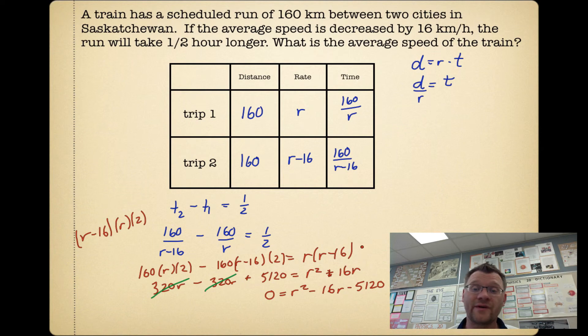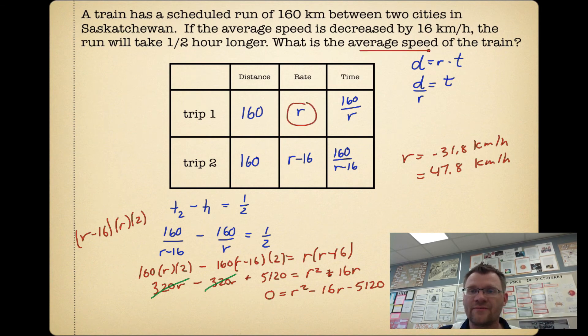When I plug it into the quadratic formula, I get two answers: r = -31.8 kilometers an hour and r = 47.8 kilometers an hour. Let's remember that we said r is our average speed. We can't have an average speed that's negative 31.8 kilometers an hour. You'd never get anywhere. So that one is discarded. Which means our answer is 47.8 kilometers an hour.